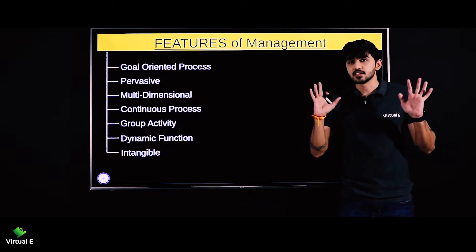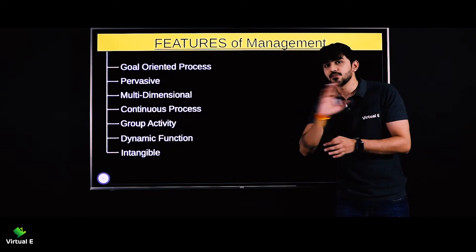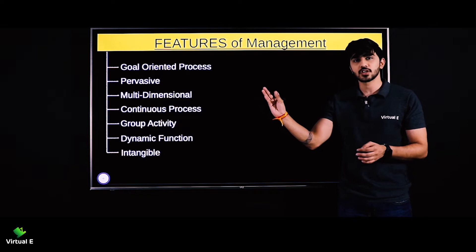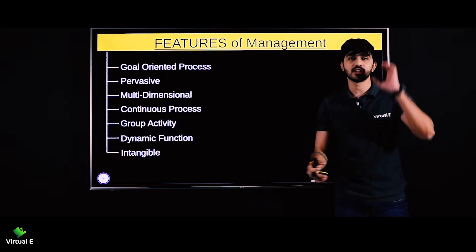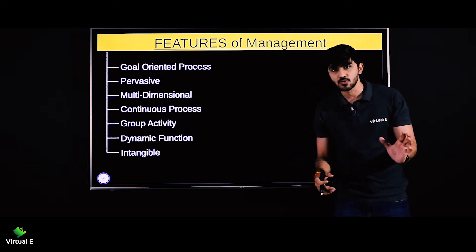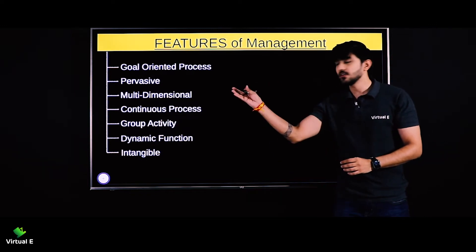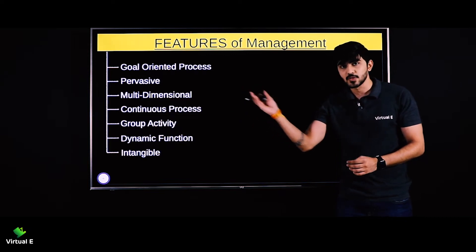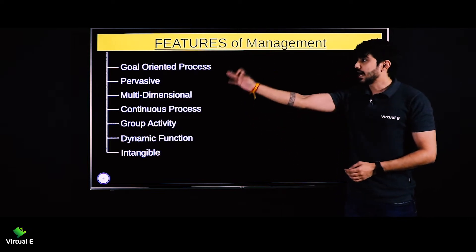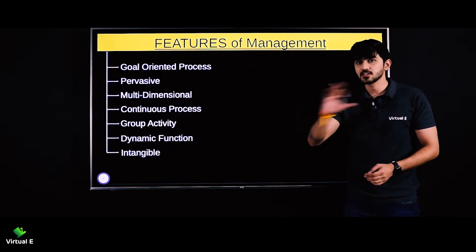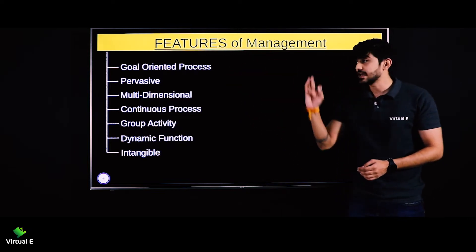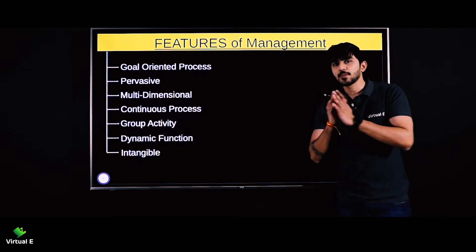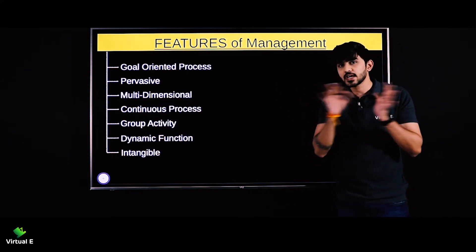Second feature is pervasive. Pervasive ka matlab hota hai omni-present — something that is present everywhere. Bhalai wo ek chhoti si organization ho ya phir ek Reliance Industries jitni badi company ho, top level management ho, lower level management ho, ya middle level management ho — management har jagah hota hai. Management is pervasive.